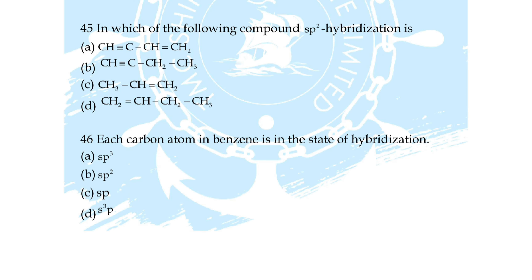Question 44: which of the following reaction produces hydrogen — option A: Mg + H₂O, B: BaO₂ + HCl, C: H₂S₂O₈ + H₂O, option D: Na₂O₂ + 2HCl? Correct answer is option A: Mg + H₂O.